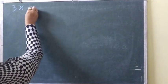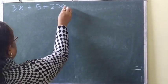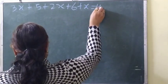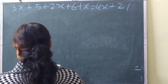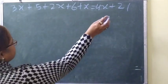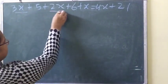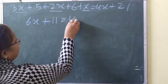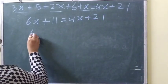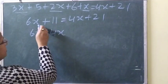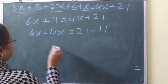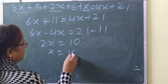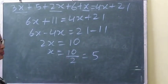Next: 3x plus 5 plus 2x plus 6 plus x equals 4x plus 21. Combining like terms: 3x plus 2x plus x is 6x, and 5 plus 6 is 11. So 6x plus 11 equals 4x plus 21. Then 6x minus 4x equals 21 minus 11, giving 2x equals 10, so x equals 5.